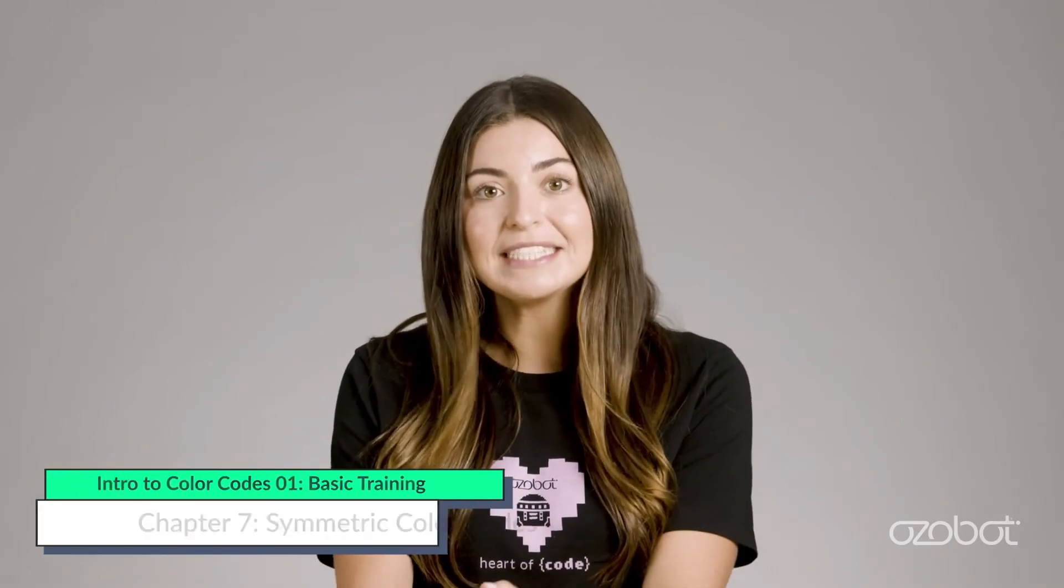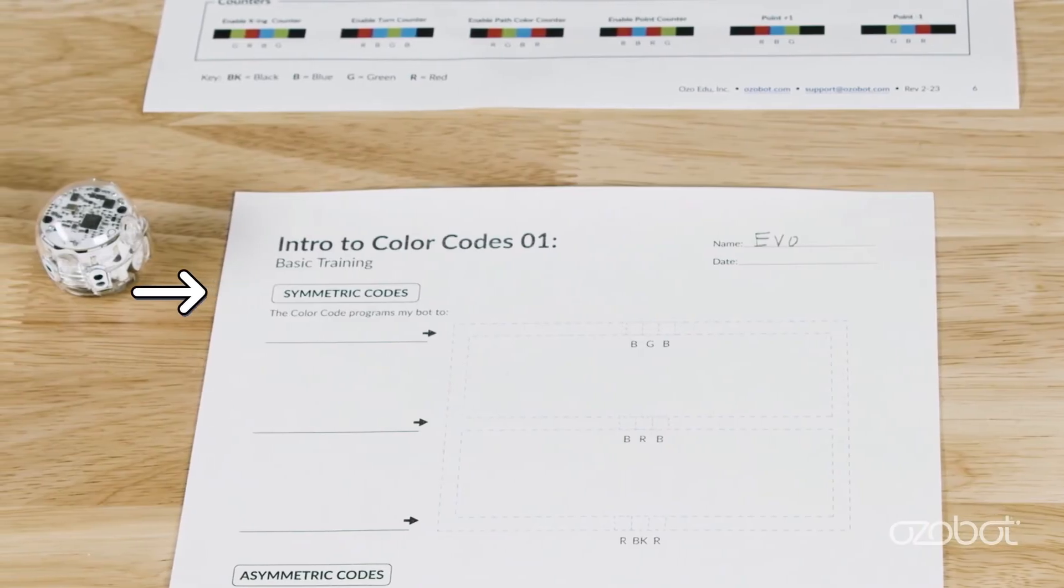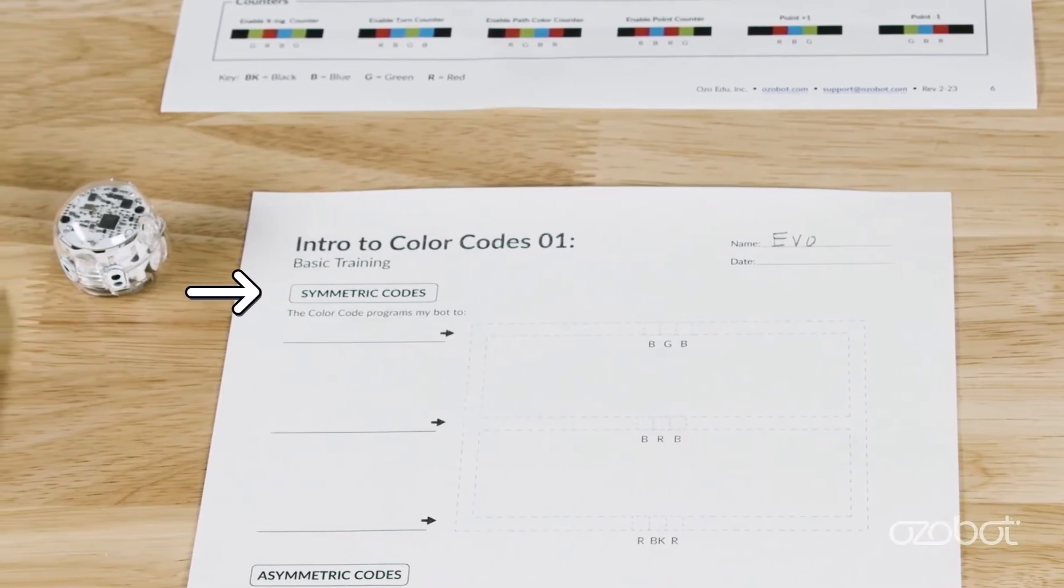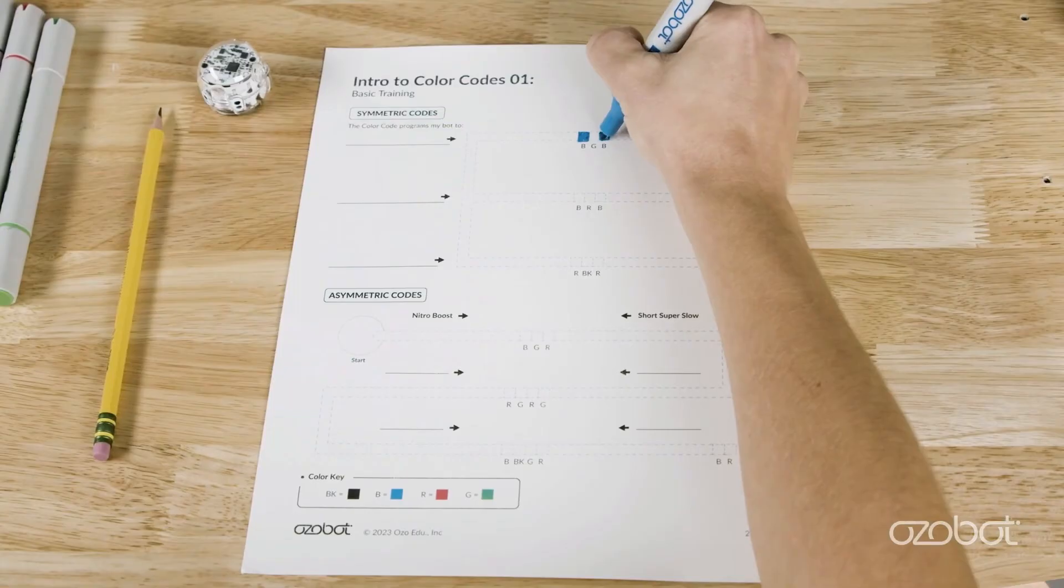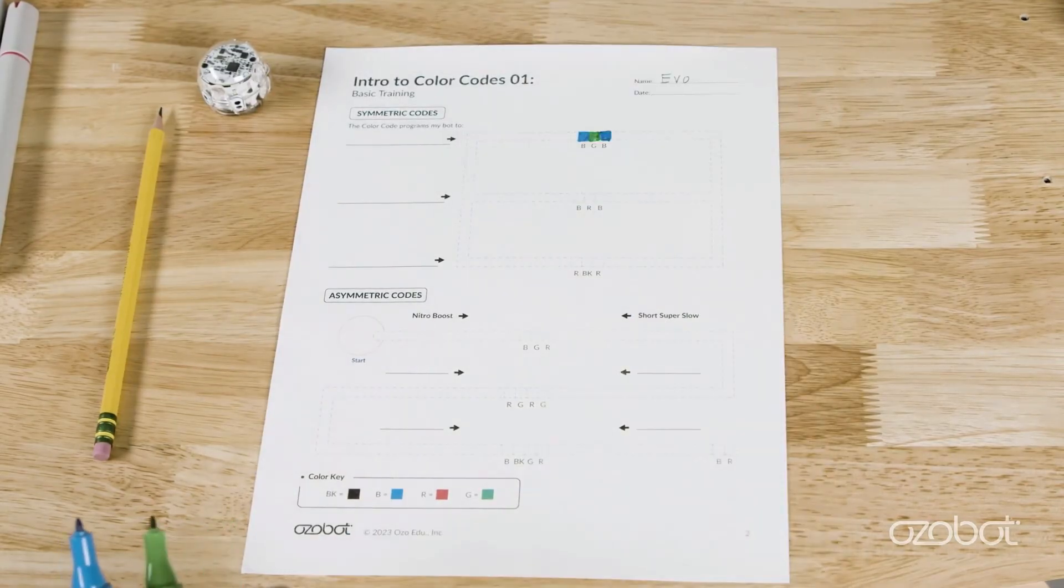You'll start with symmetric codes. No matter which direction the bot is traveling when it reads the code, the action of the bot is the same. At the top of page two of the activity sheets you'll see symmetric codes. Fill in the three boxes in the top line blue green blue according to the color key.